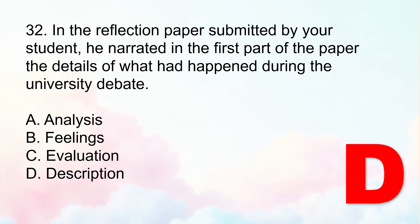The correct answer is Letter D, description. The description phase of Gibbs' reflective cycle is about stating the facts, or what happened. This includes who was involved, where, when, and what took place. So Letter D is the best answer.